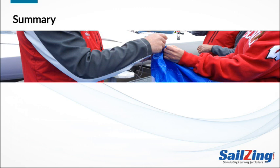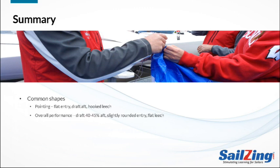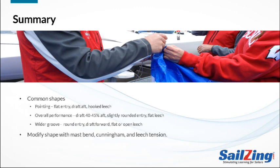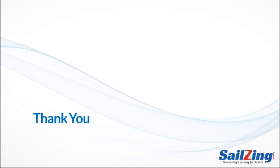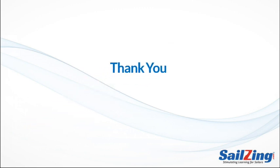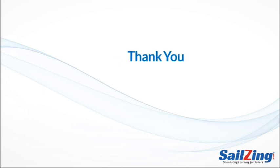We hope you've taken away at least a few new insights from this discussion. To summarize the key concepts: you can shape your sail to achieve different goals. For pointing, you want a flat entry with draft aft and a hooked leech. For best overall performance, you want the draft 40 to 45% aft, a slightly rounded entry, and a flat leech. For a wider groove, you want a round entry with draft forward and a flat or open leech. The key controls to modify the shape are mast bend, Cunningham, and leech tension. For more information, please visit our website at www.salesing.com.